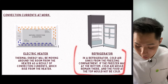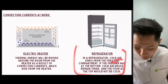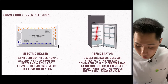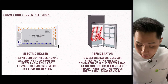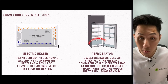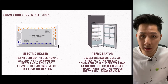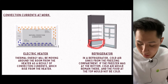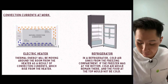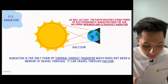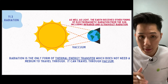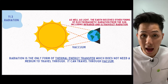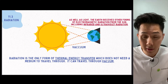Whereas for a refrigerator, the freezing compartment is always at the top because cold air will sink down. This is what we want — we want the lower part to be colder. So that's two methods of how heat can be transferred: conduction for solid, and convection for liquid and gas.